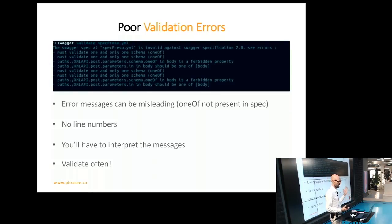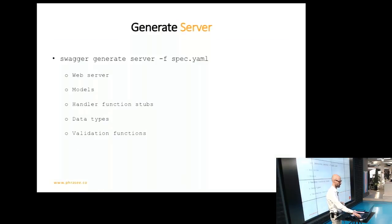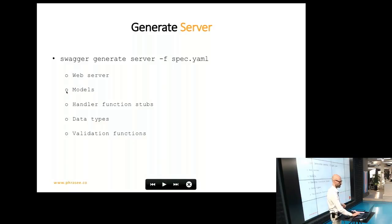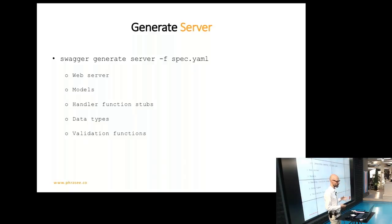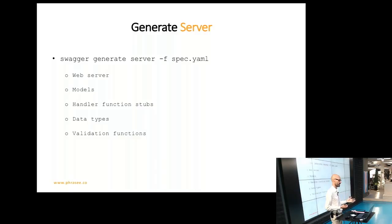Let's assume you manage to validate and everything passes — then you can use the tool for what it really shines, which is code generation. The tool is capable of generating Go code for server and client. The two commands are very similar, and this is the simplest form in which you can run the command. This will generate code that will compile down to an actual server — a Go web server that can serve either HTTP or HTTPS. It will generate all the models of your specification, stub all the handler functions, and also generate a lot of data types and validation functions for all your endpoints. I am particularly keen on the last two because this enforces very good practice from the get-go — you put your best foot forward because the tool will generate code that enforces good practices.